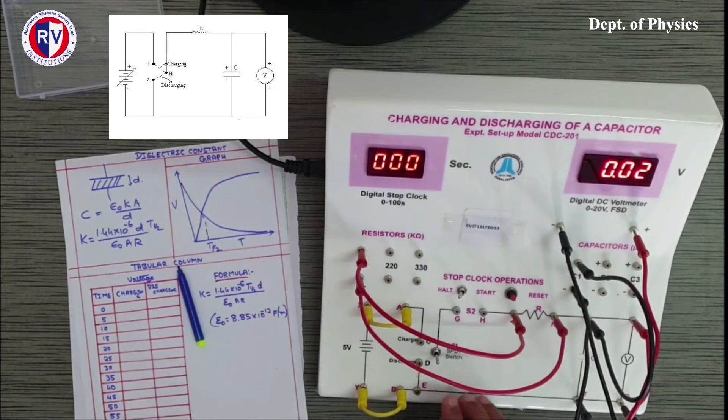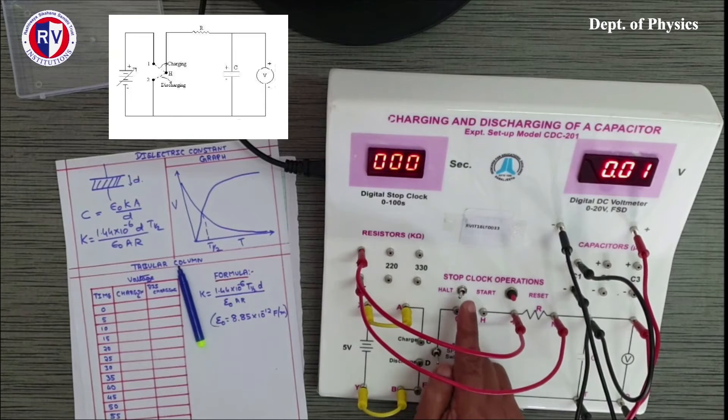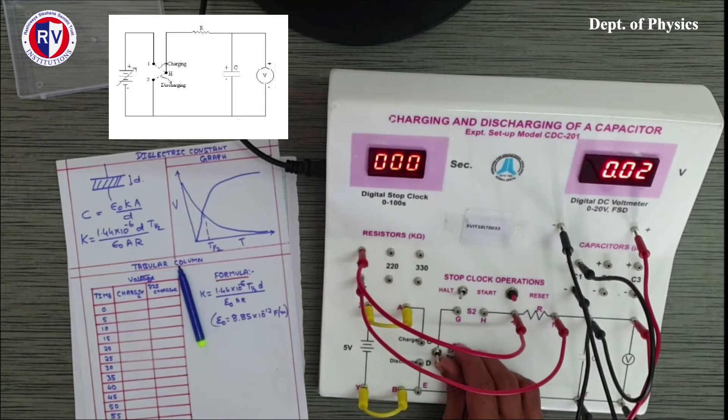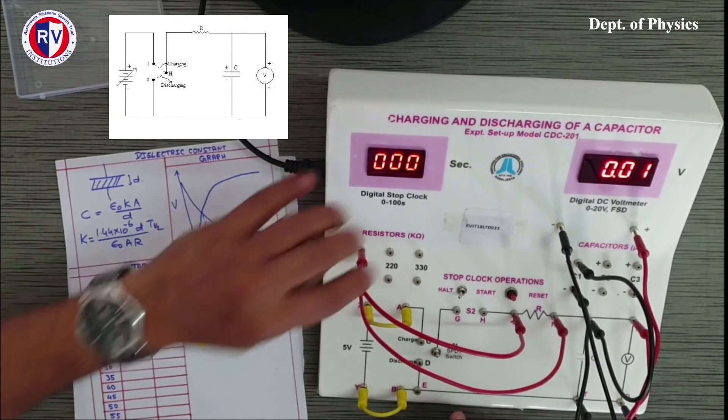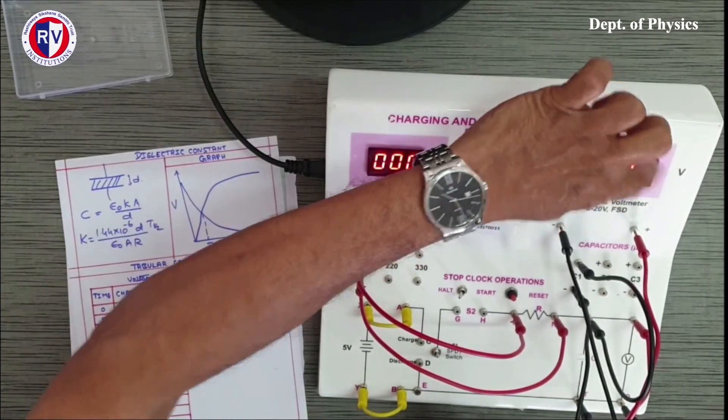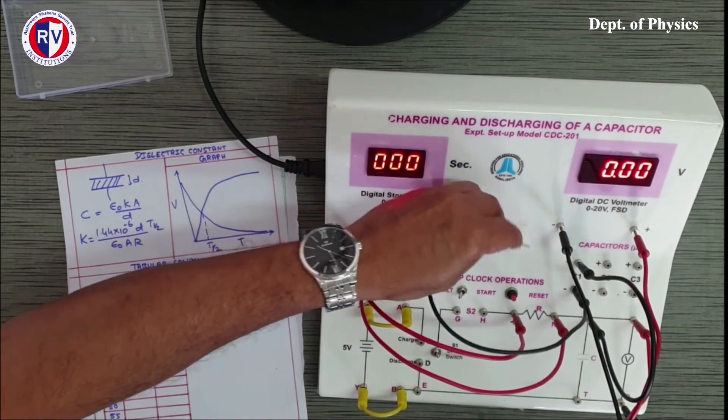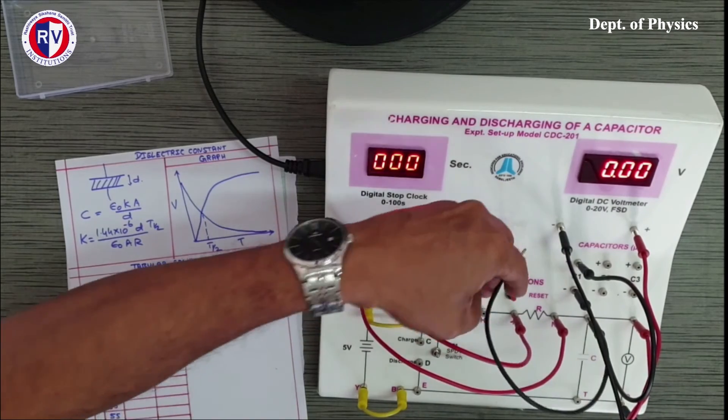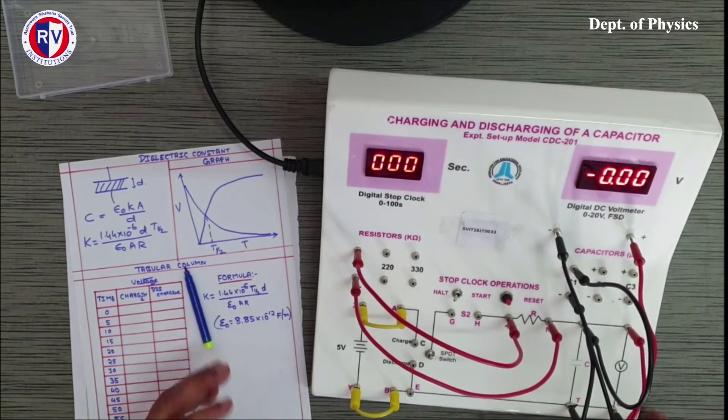Now, if you see this charge-discharge key is in the discharge mode, switch is off first. No current is flowing. If I put it in the charging mode, first before starting, I should ensure that the voltage is also zero. When we start the time zero, voltage also must be zero. If it is not showing zero, one terminal of the capacitor has to be removed and can touch the other one, short circuiting this capacitor. So the voltage will come down to zero. Now it is ready for starting the experiment.